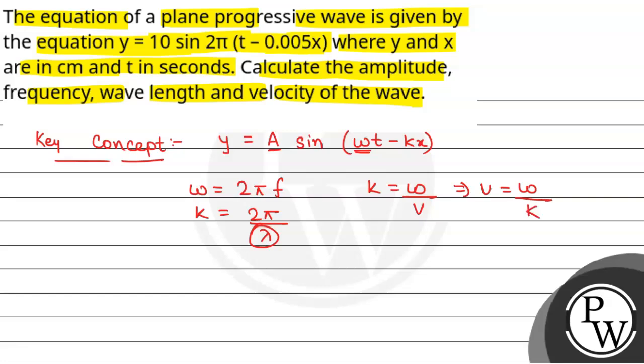We will see the plane progressive wave equation that is y = 10 sin 2π(t - 0.005x).